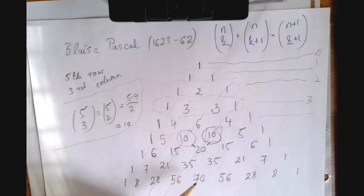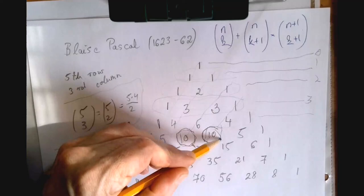Here is n choose k, here is n choose k plus 1, and then when we add those two, we get n plus 1 choose k plus 1. One more thing and then we are done.